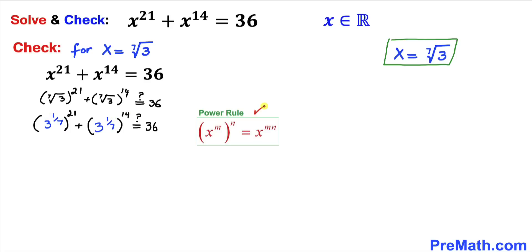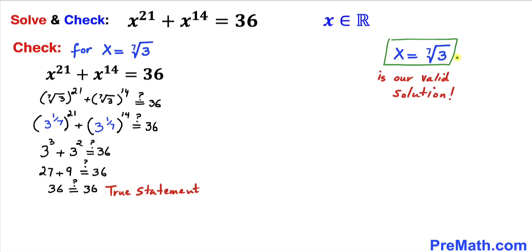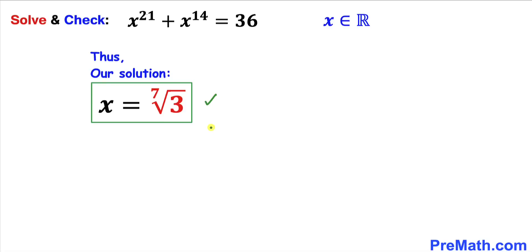Applying the power rule of exponents, we multiply the nested exponents: 3^(1/7 · 21) + 3^(1/7 · 14) = 3³ + 3² = 27 + 9 = 36. The left hand side equals the right hand side, confirming this is a true statement. Therefore x = ⁷√3 is indeed our valid solution. Thanks for watching and please don't forget to subscribe to the channel for more exciting videos.